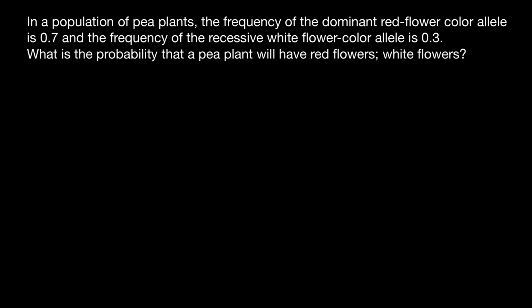Hello and welcome to Nikolai's genetics lessons. Today's problem is: in a population of pea plants, the frequency of the dominant red flower color allele is 0.7 and the frequency of the recessive white flower color allele is 0.3. What is the probability that the pea plant will have red flowers or white flowers?